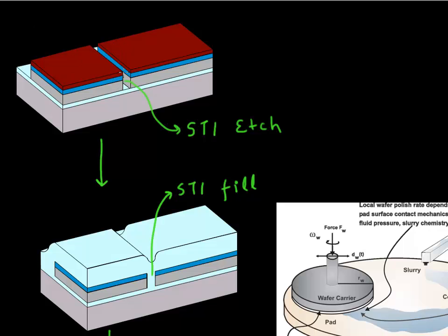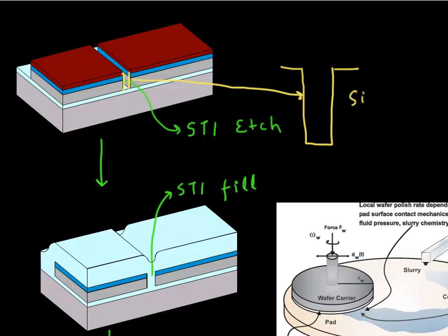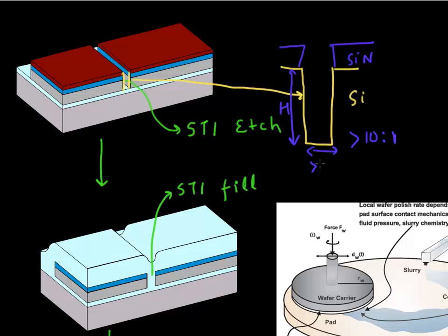For this STI etch, I want to point out two things. One is the aspect ratio of this etch. We etch into the silicon using nitride as the hard mask. If we look at the STI feature, it has this silicon and we have used nitride as a hard mask. The aspect ratios involved in this etch are typically more than 10 to 1 — that is, the height of the etch can be more than 10 times the width.